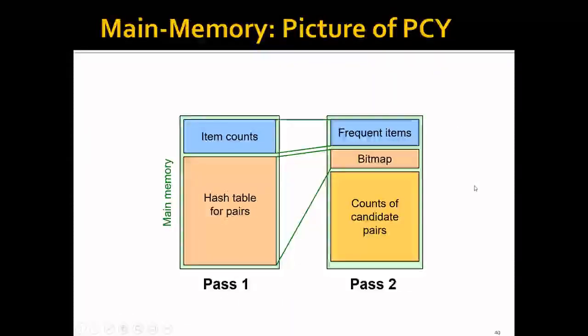This picture illustrates the memory usage for both passes. In the first pass, one block of memory is used to count individual items, and all the rest stores the hash table. In the second pass, we distill this large chunk to keep only the frequent items, and the hash table is compressed into a bitmap. We can use the rest of the memory to count the candidate pairs.